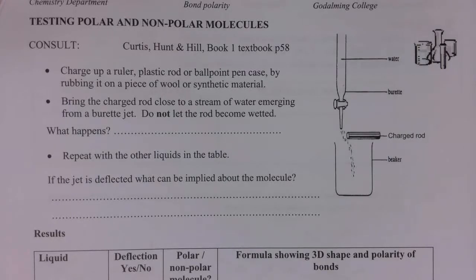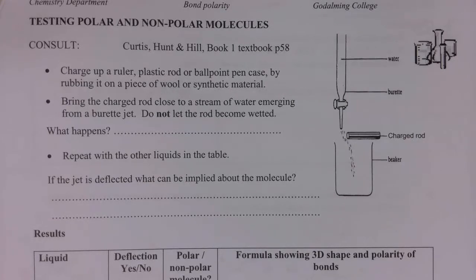We can test whether or not a molecule is polar or non-polar by setting up the experiment on page seven. We've got a burette with water in it and a charged rod. As you open up the burette you have a stream of water, and if it's deflected by the charged rod we say that the molecule is polar. It's attracted towards an object with an electrostatic charge because the polar molecules tend to move and rotate, as the charge on one side of the molecule is attracted to the opposite charge on the object. This is an important practical and you need to be able to describe it for the exam.